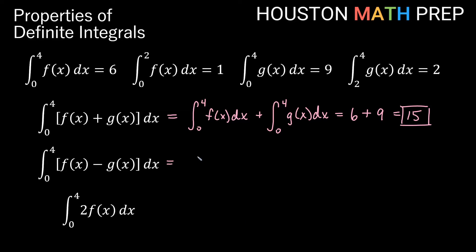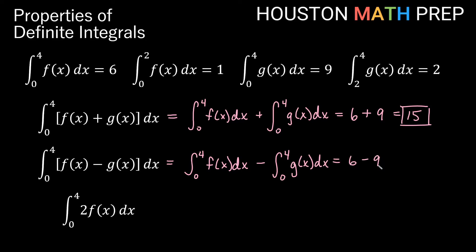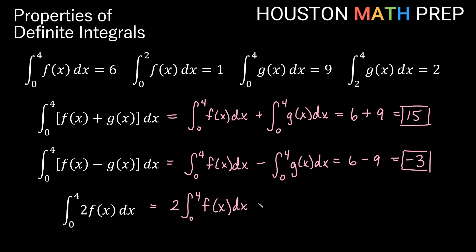For the integral of f minus g from 0 to 4, we subtract: 6 minus 9 gives a net area of negative 3. This negative 3 tells us that when we take f of x minus g of x we get more area below the axis than above. For 2 times f of x, we factor out the constant multiple 2 and multiply the definite integral of f of x on 0 to 4 by 2: that's 2 times 6, giving us 12 — twice as much area under 2f as under f.